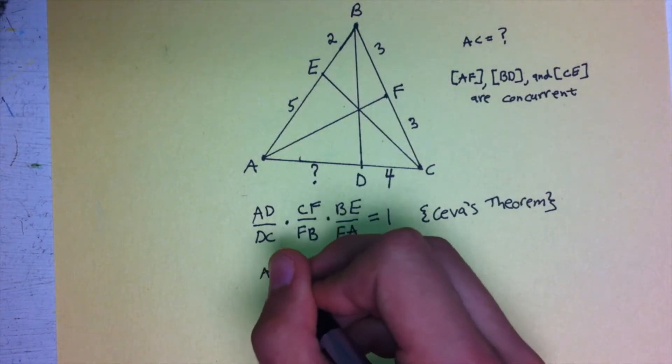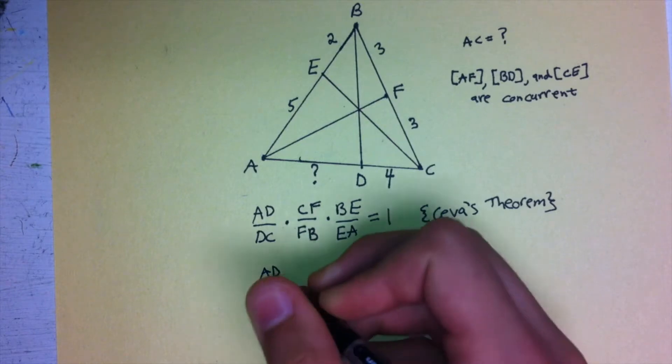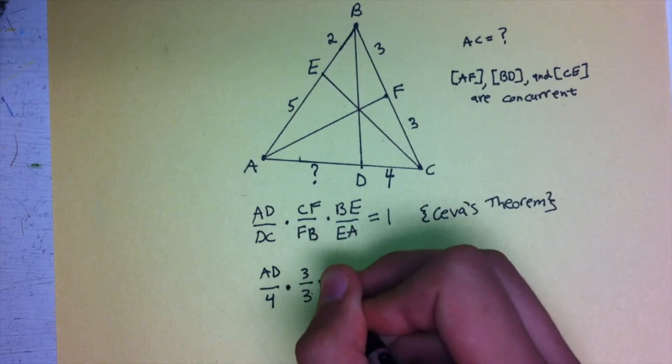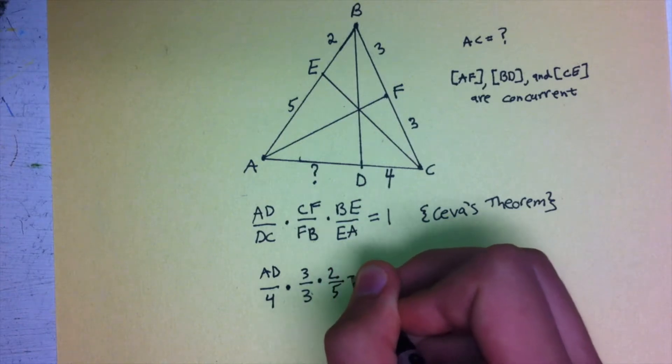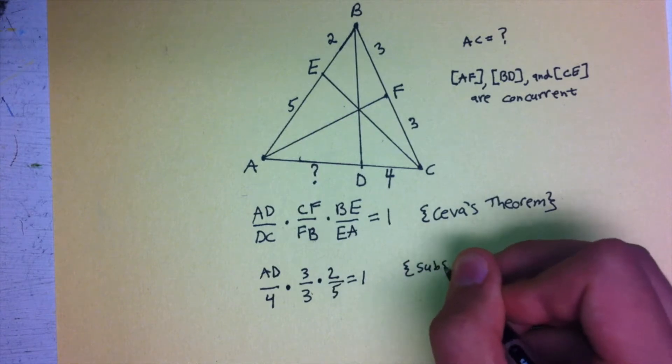Here, we still have AD because we don't know what AD is. That's divided by 4 because DC equals 4, times 3 divided by 3, times 2 divided by 5. That's equal to 1 by the property of substitution.